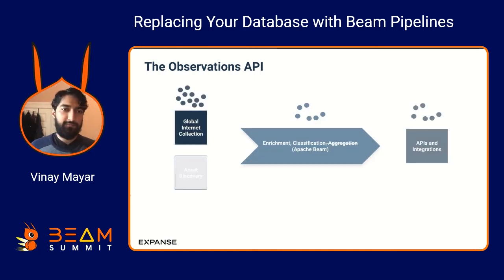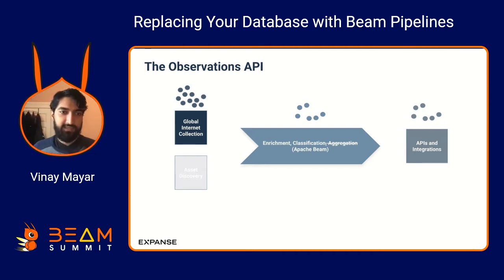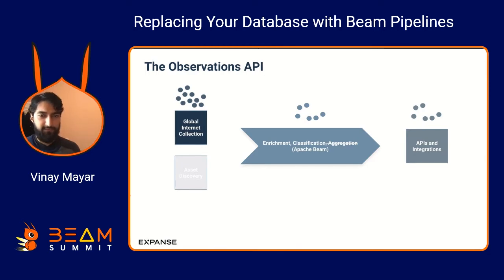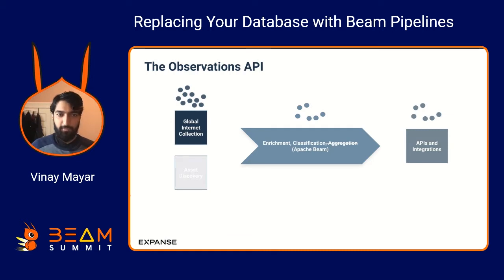Mapping this back to the previous diagram: in the global internet collection tier, we have these data points — observations of things on the internet. We filter that down, take a subset relevant to customers, and enrich them with other data sources. We're surfacing each of those data points in the Observations API. Unlike some of our newer APIs, this one does not perform any aggregations or summarize data by IP — it's just a one-to-one every time we see something.